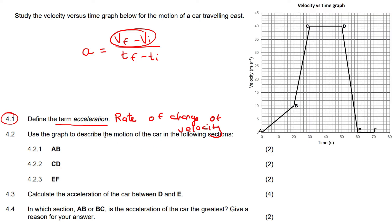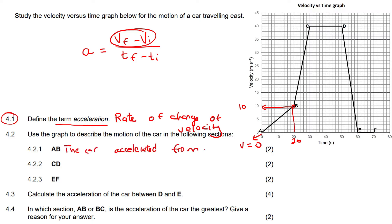Use the graph to describe the motion of the car in the following sections. The first section is AB, from A to B. If you look at the velocity at A, it's zero. If you look at the velocity at B and read it off, it's 10. And if you look at the time, it's 20. So the car accelerated from 0 meters per second to 10 meters per second in 20 seconds.